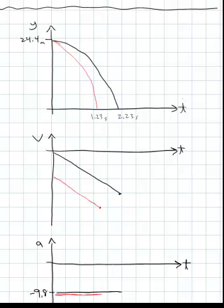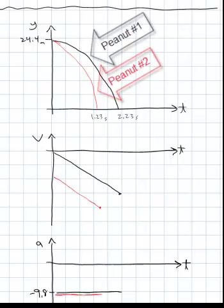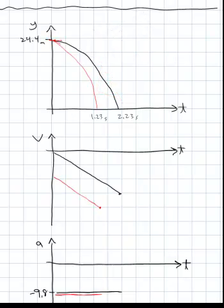So the first one, position versus time, I've used the black line for peanut number 1. You can see that the slope at t equals 0 has to be 0, right? That's right there. The slope has to be 0, and then it continues in this direction. It's a parabola, and it gets to y equals 0 at 2.23 seconds.